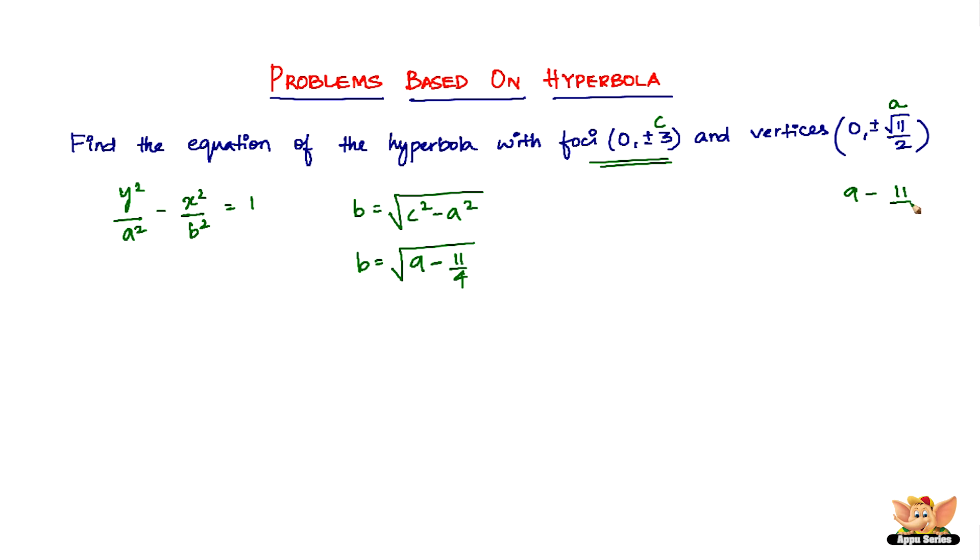So let's solve this now. 9 - 11/4 gives you 36 - 11 divided by 4, which is 25/4. So we have b equals square root of 25/4, which is 5/2. So we've got b as 5/2.